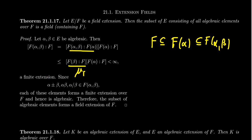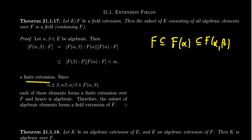Therefore, the degree of F adjoin alpha beta over F adjoin alpha can't exceed the degree of F adjoin beta over F. It could be smaller, depending on how alpha and beta interact. Since beta is algebraic over F, its minimal polynomial has finite degree, so the degree of F beta over F is finite. This implies the degree of F adjoin alpha beta over F adjoin alpha is finite, and thus the degree of F adjoin alpha beta over F is finite — a product of two finite numbers. A finite extension is always algebraic.